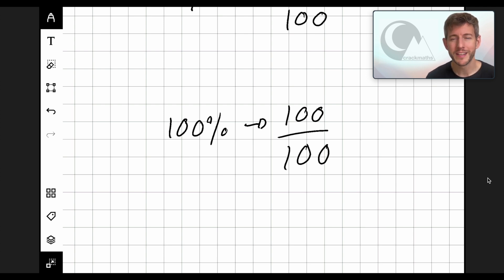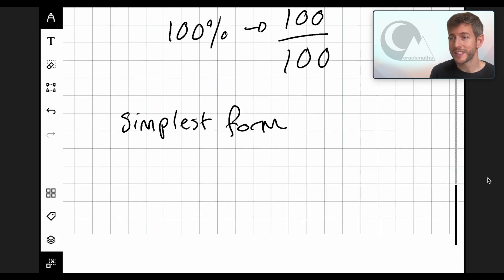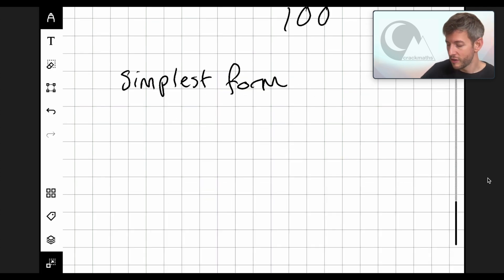Now, what we're likely to come across is we're likely to come across this phrase called simplest form. OK, so that means we can't necessarily leave our fractions as large numbers. So let's, for example, take 40%.